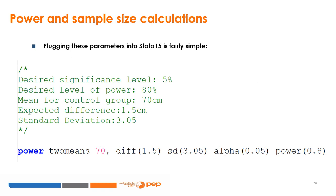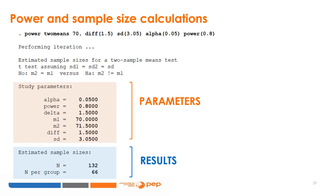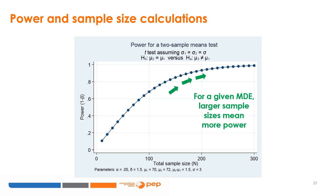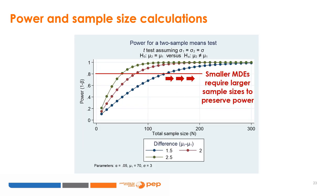Plugging these parameters into Stata 15 is fairly simple. Once we plug in the parameters, we get the following results. The first part of the window restates the study parameters we entered. The last part, highlighted in blue, shows the total sample size and the sample size per group. It is also possible to output a graph depicting the relationship between power and sample size for a given MDE. We can see that for a given MDE, larger sample sizes mean more power. This plot shows power versus sample size for different MDE sizes — smaller MDEs require larger sample sizes to preserve power, because smaller effects are harder to detect from noise.